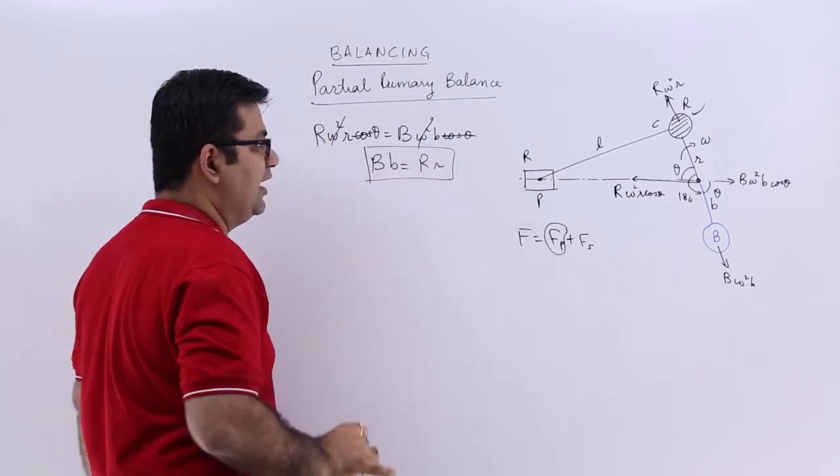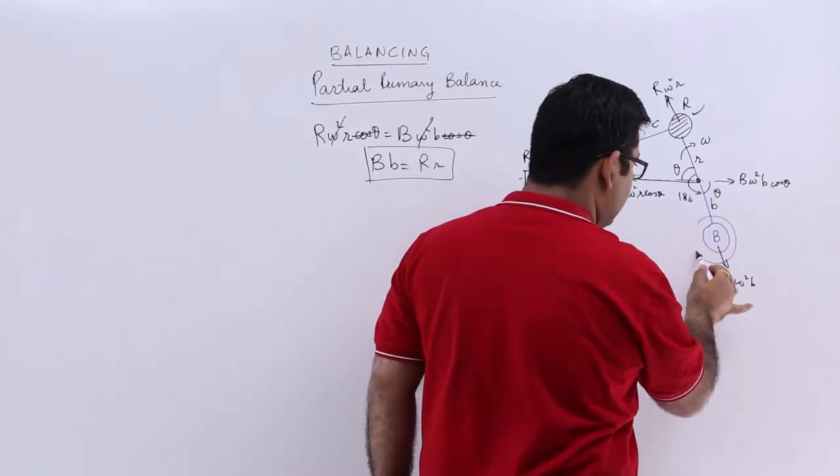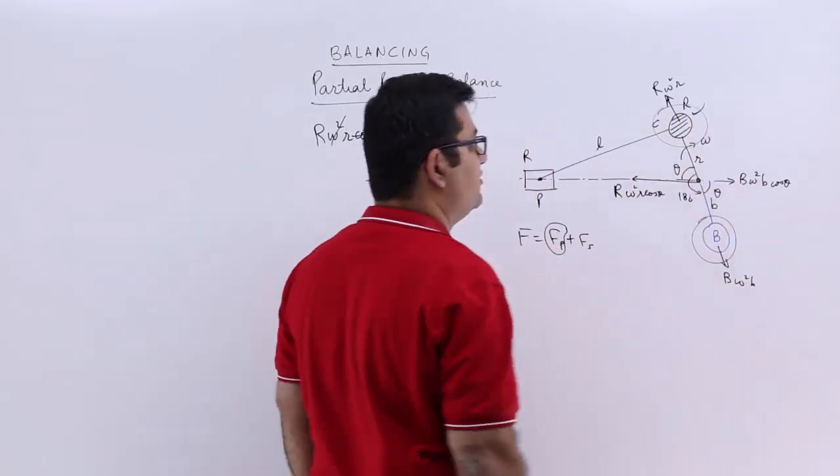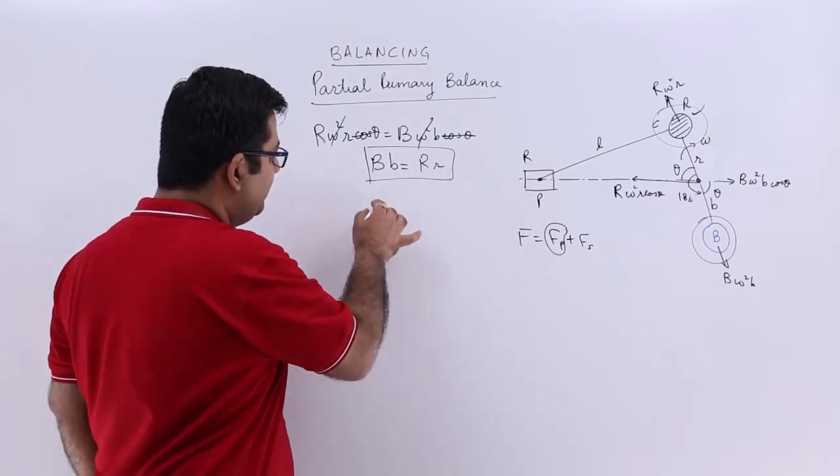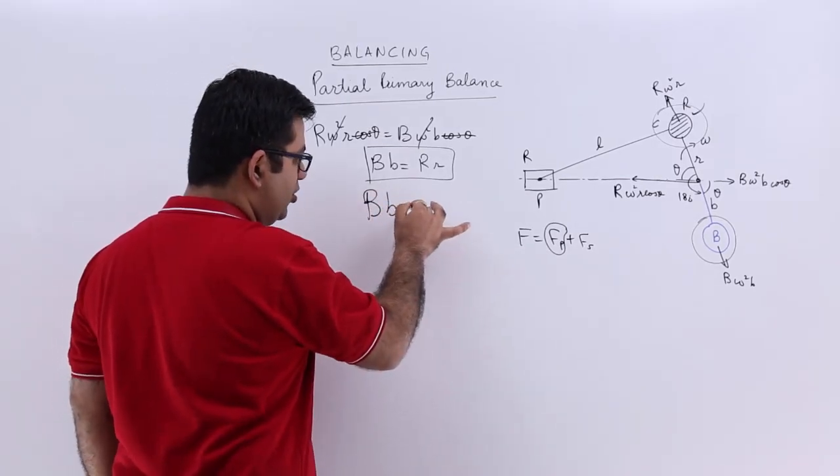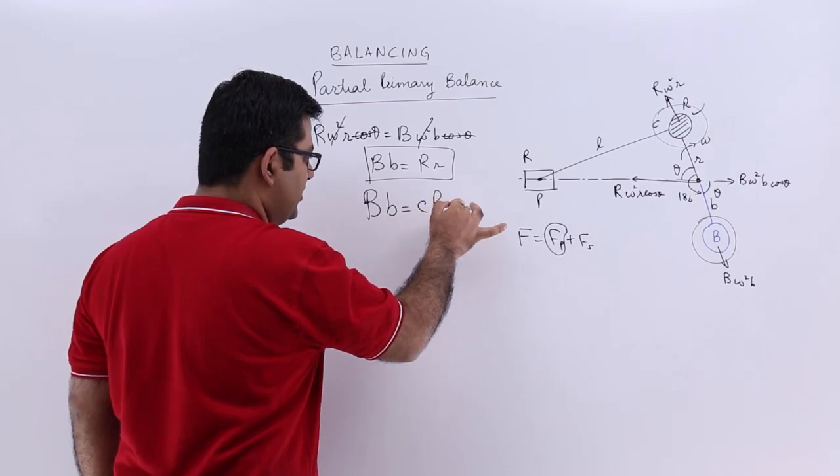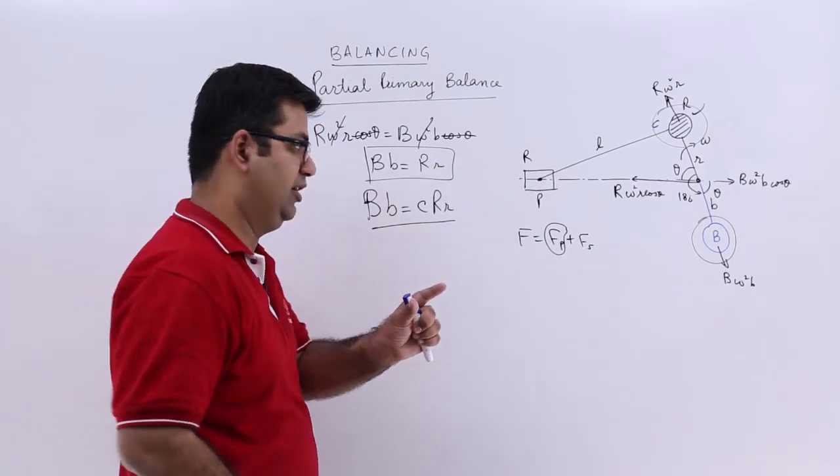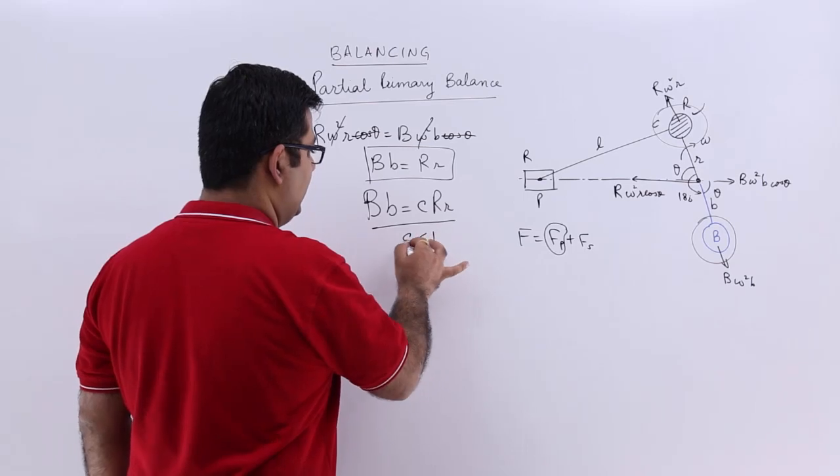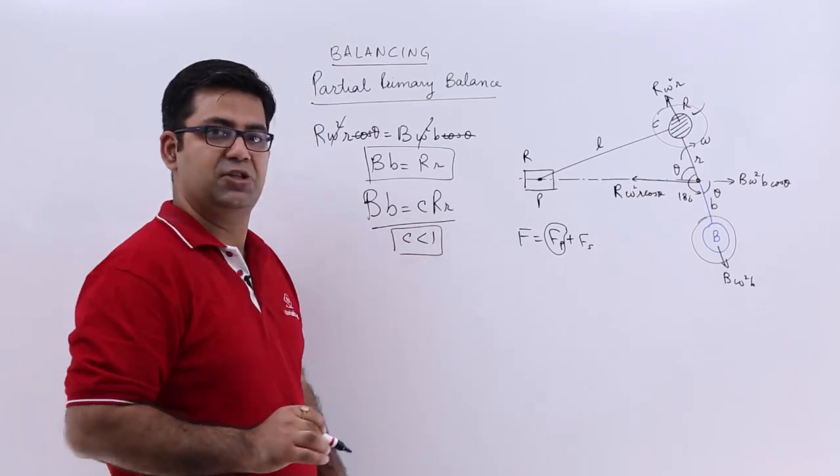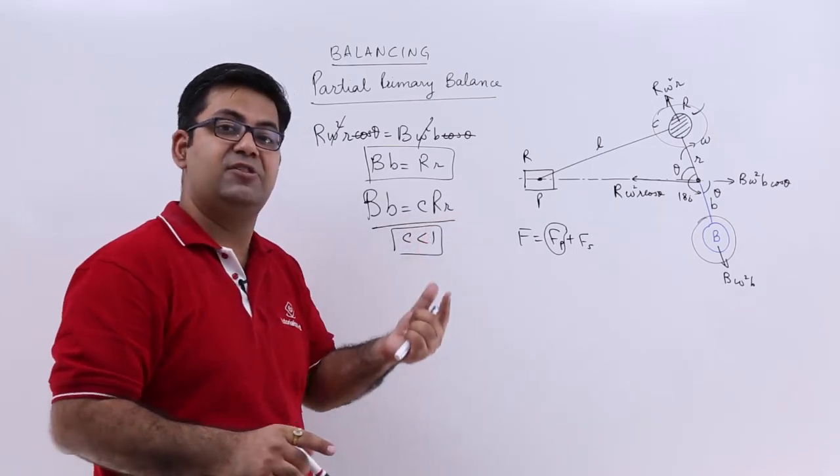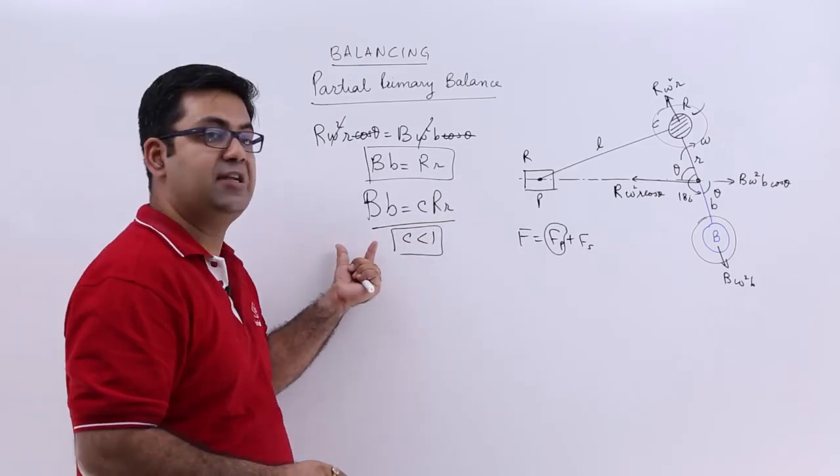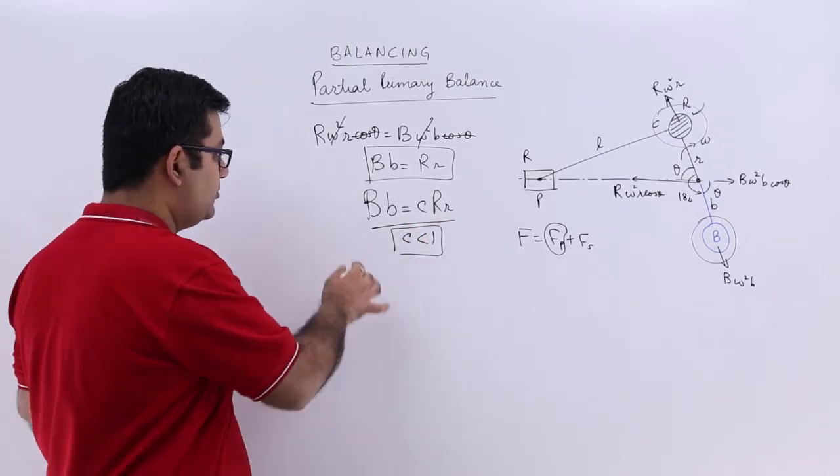This means that this mass is perfectly balancing this mass. But actually this is not the case. This mass is only able to partially balance a fraction of it. So I would say c is less than 1. So c is that fraction of the disturbing force which is being balanced by the balancing mass.